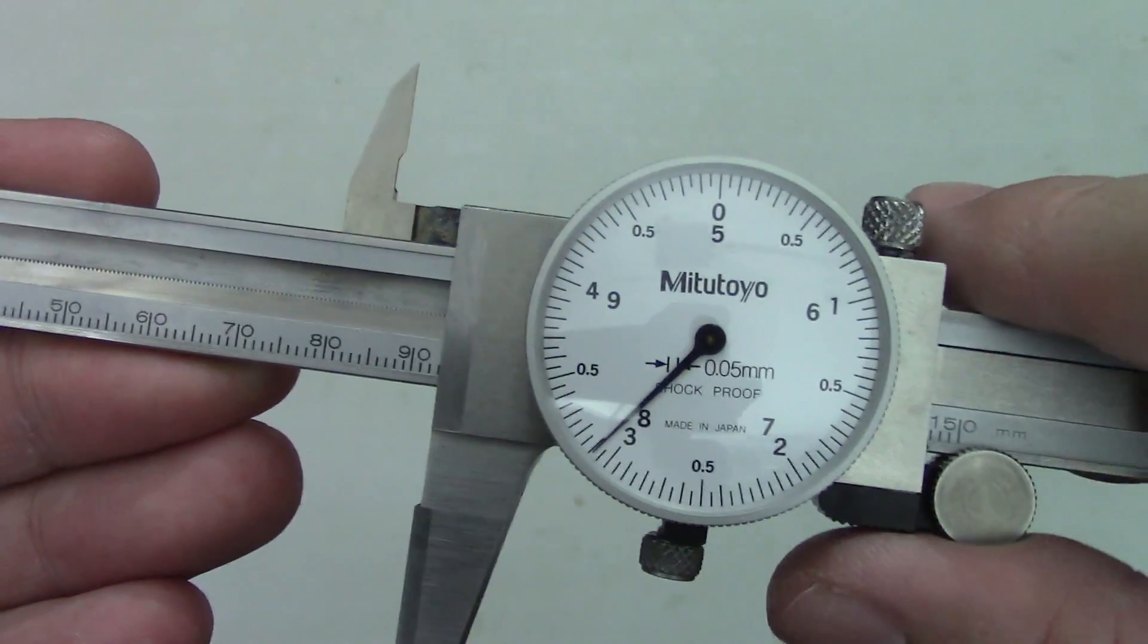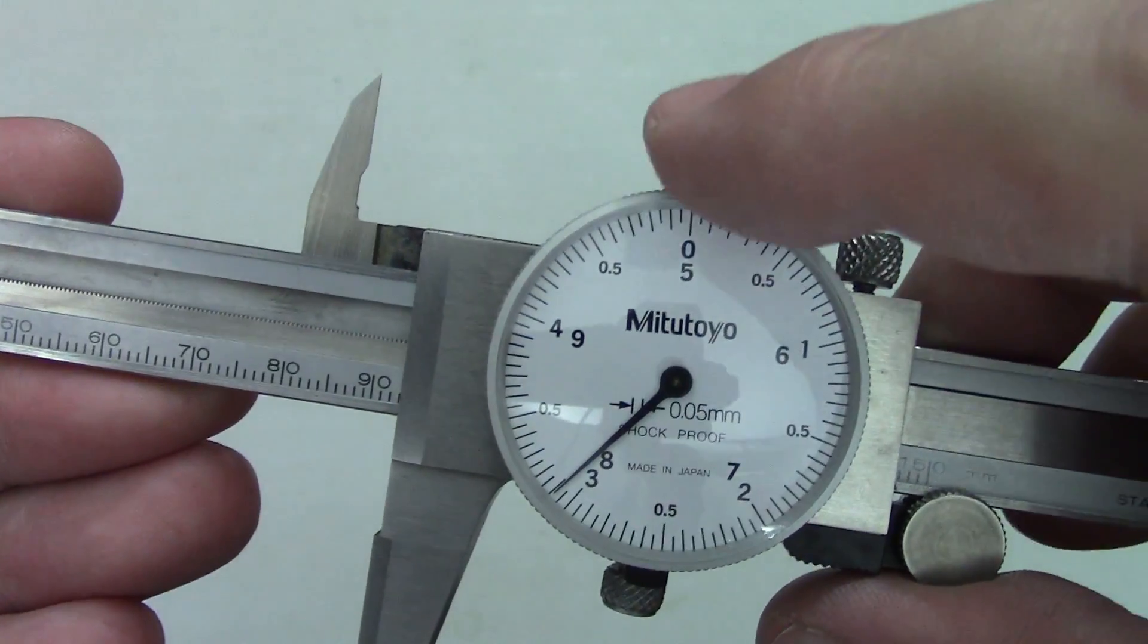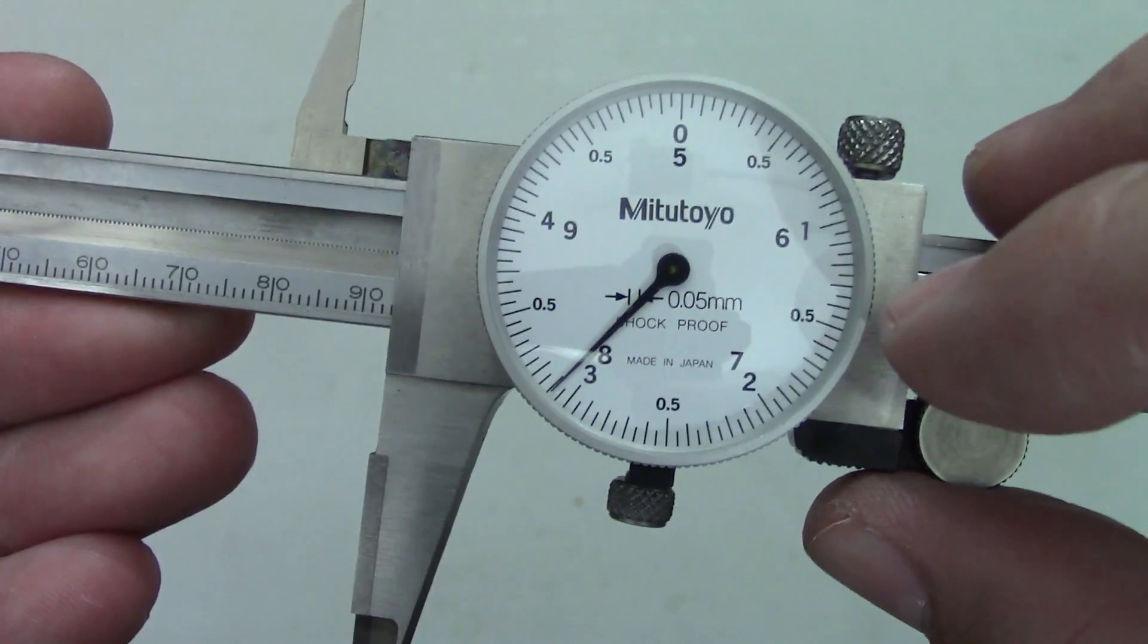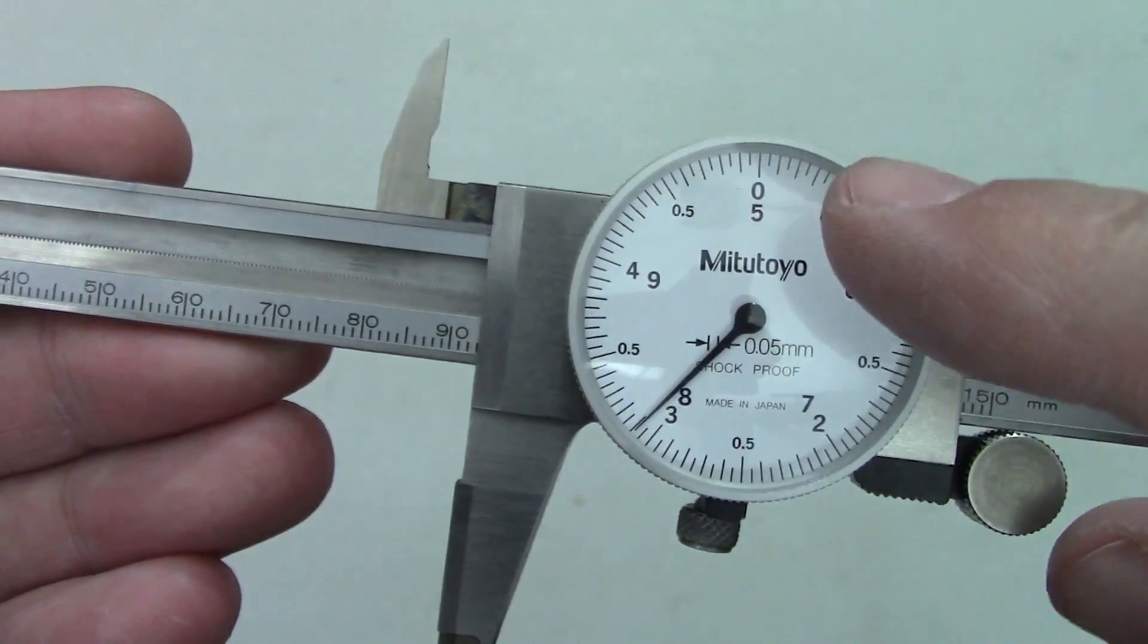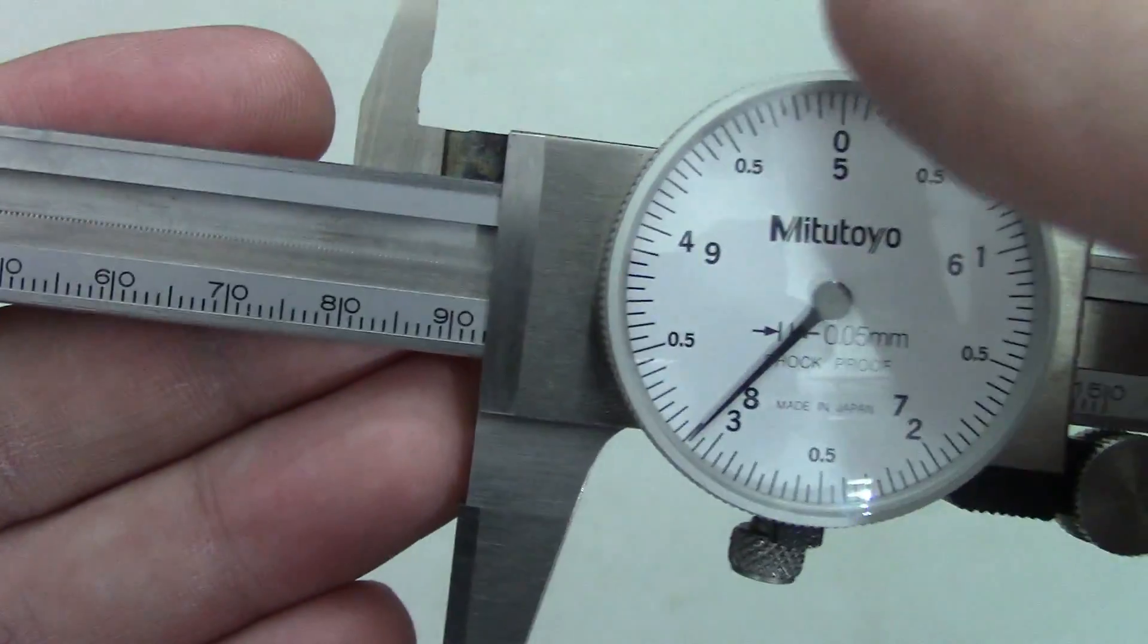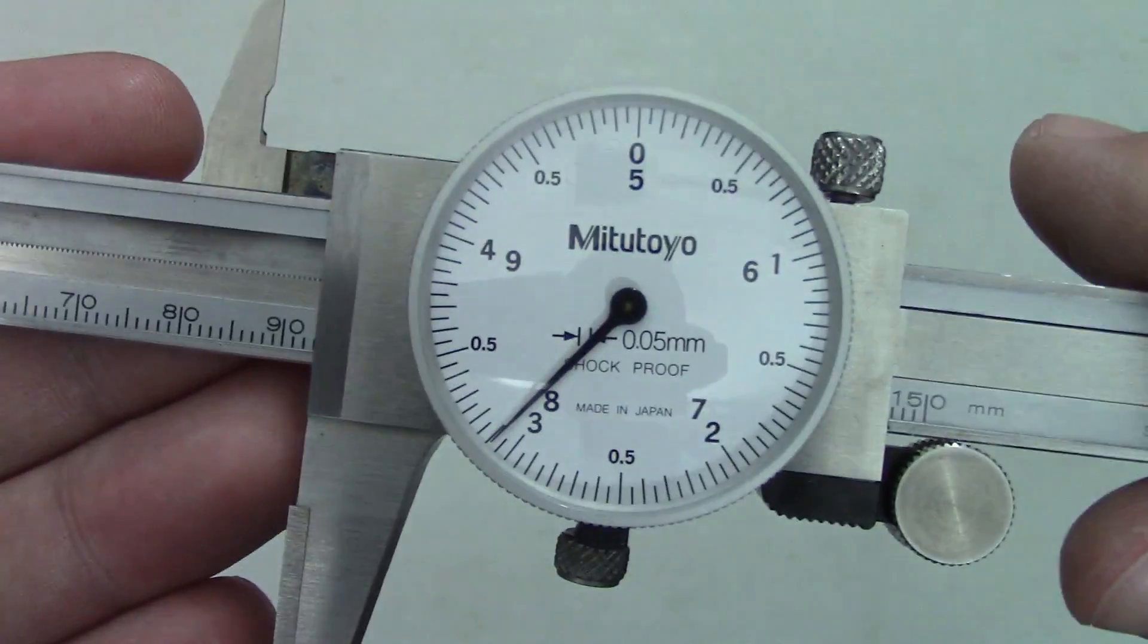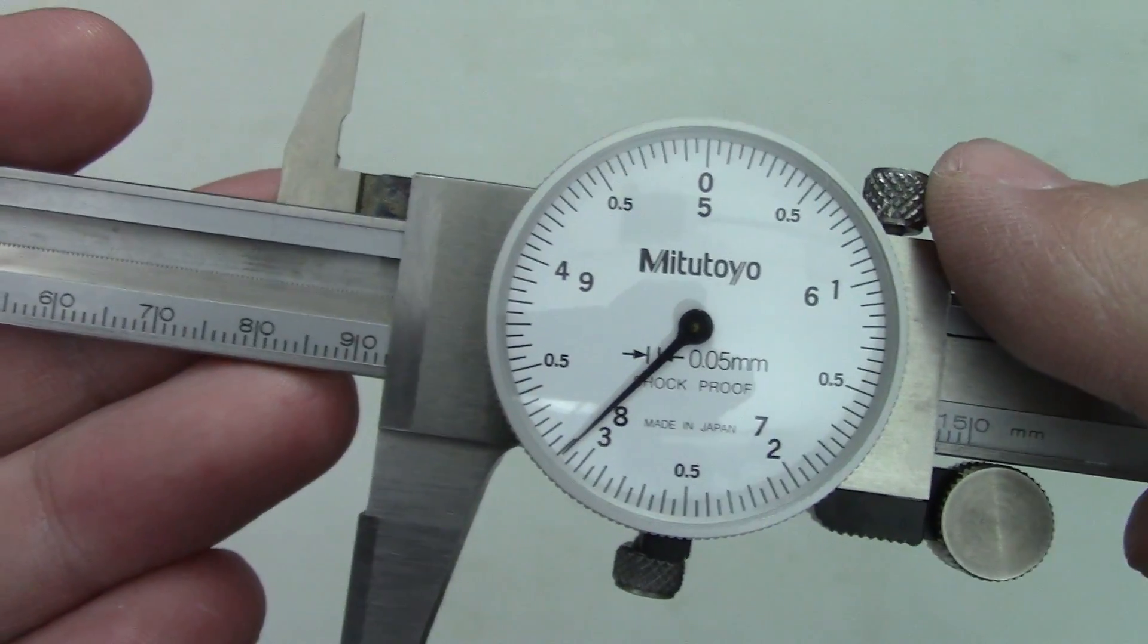As you can see, the dial is numbered every 0.5 millimeters and there are larger numbers at each millimeter of travel, marking 0-4 on the outside and 5-9 on the inside. Some varieties are graduated in 0.02 millimeter increments with 2 millimeters of travel around the dial. The principles are exactly the same, you just need to be aware of what you have.